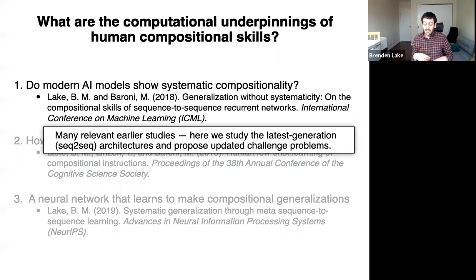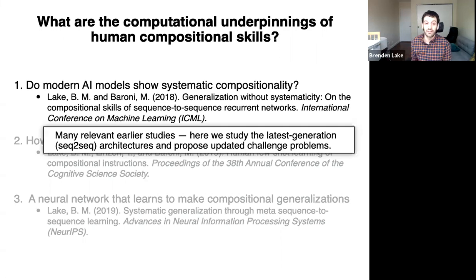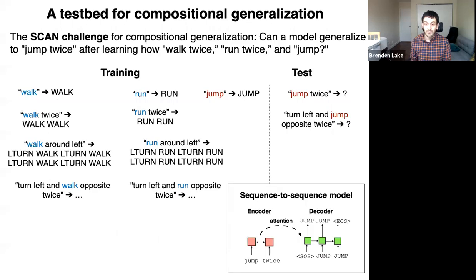It's worth noting that there's been a number of relevant earlier studies looking at compositionality in neural networks, and the contribution here was to study the latest generation of models, in particular seq-to-seq models, and propose updated challenge problems to study compositionality and systematicity in modern deep learning systems. This was a paper published at ICML in 2018 with Marco Baroni.